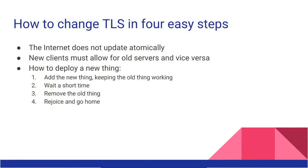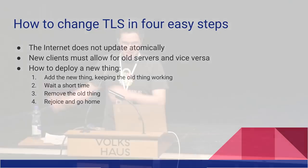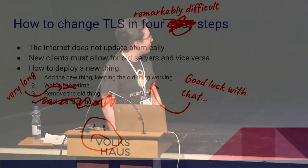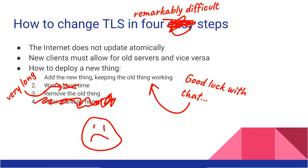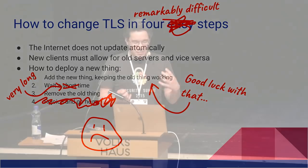We have four easy steps to change TLS. First, we add the new thing, but we carefully design it so that old connections still work, and we sort of upgrade the ones we can. Then we wait a short while, remove the old thing, and rejoice. No. Everything on this slide is a lie. This is actually a huge pain. TLS is a vast ecosystem with lots of different implementations with varying degrees of quality and ability to update things. As a result, we end up having a very hard time removing things, and even adding things ends up actually being rather difficult.